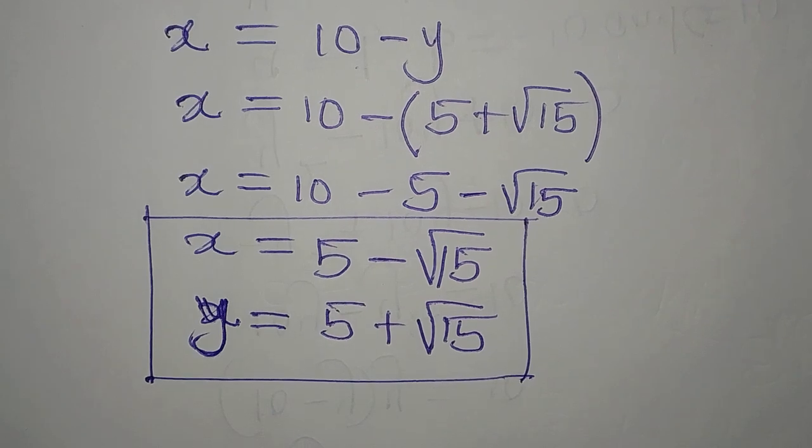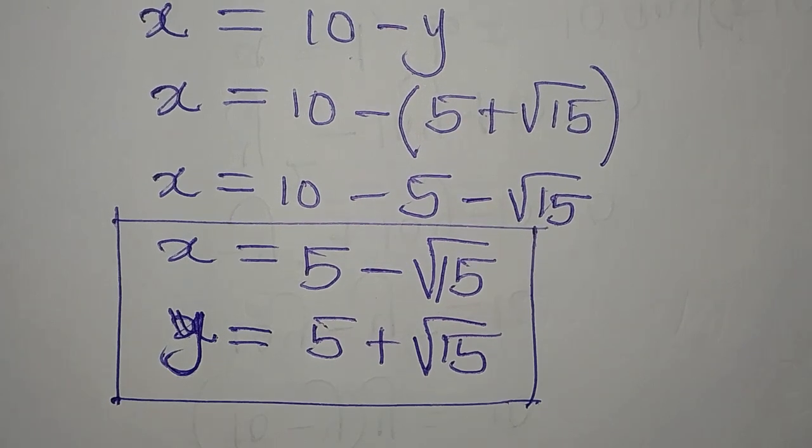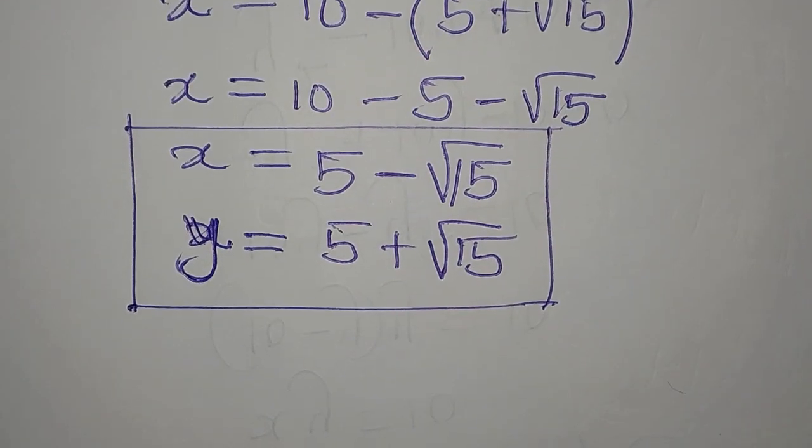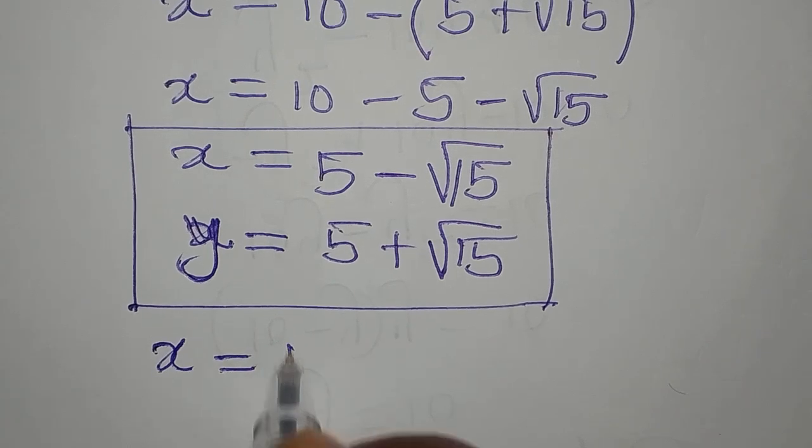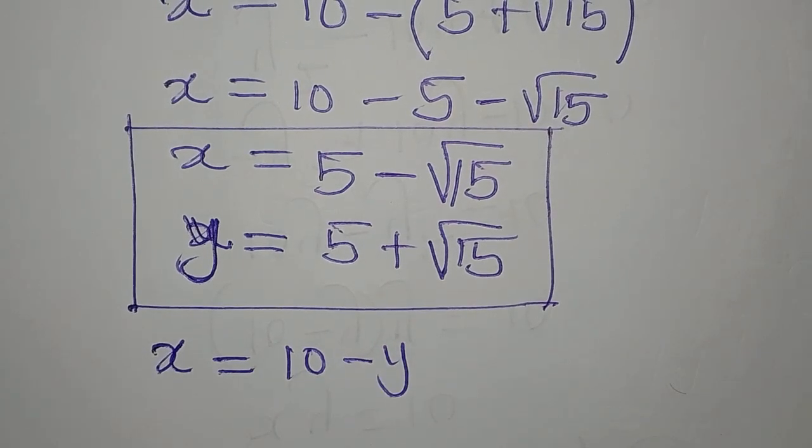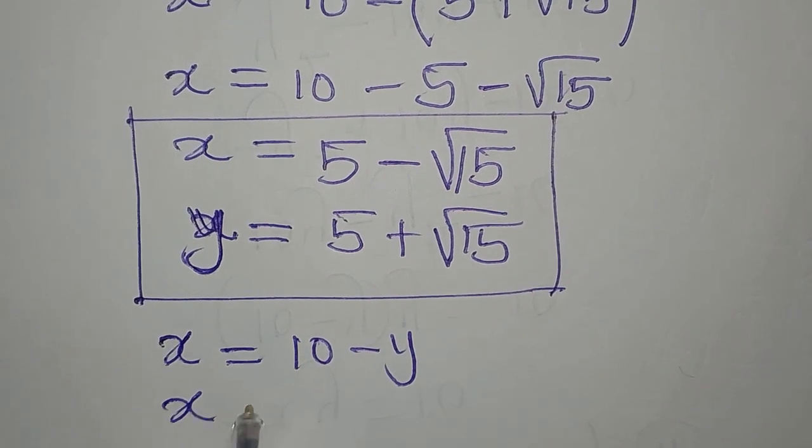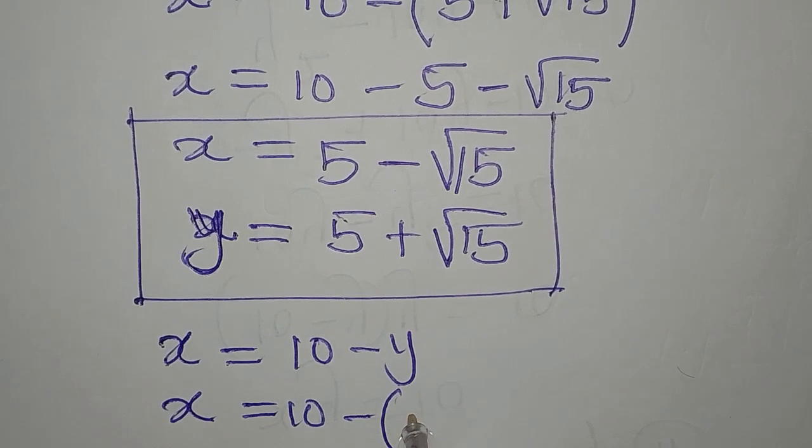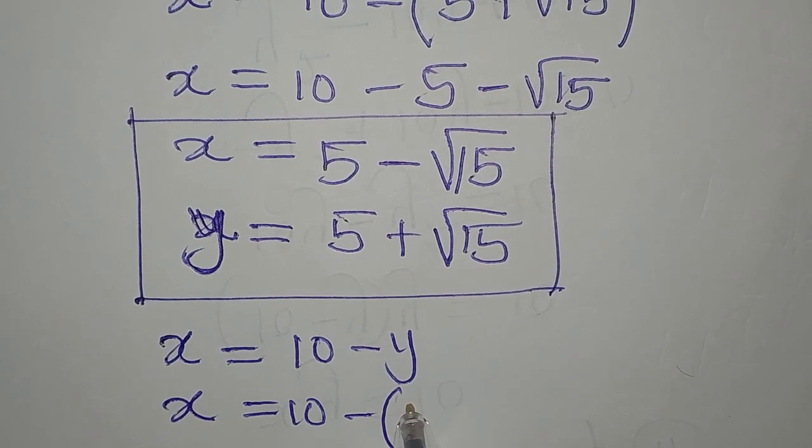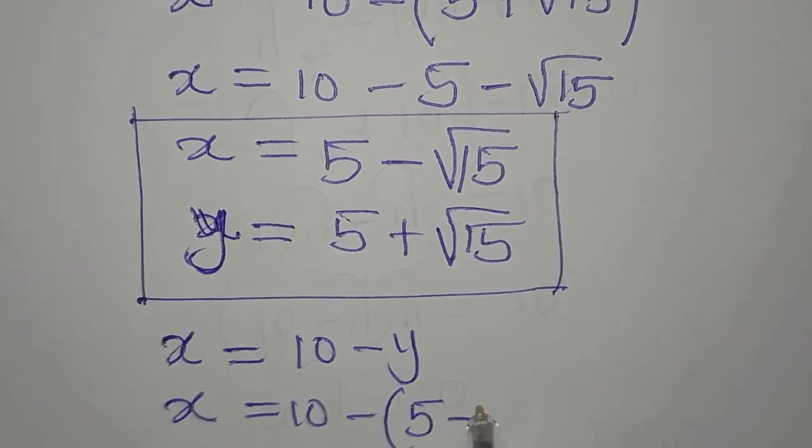And then let us get the second value of y. Remember our equation 3 is still x equals 10 minus y. So now our y is 5 minus root 15.